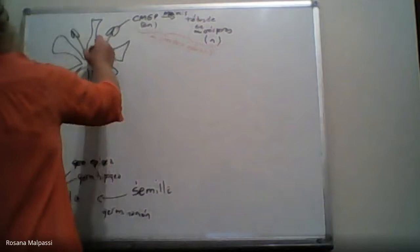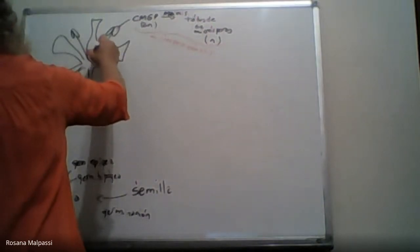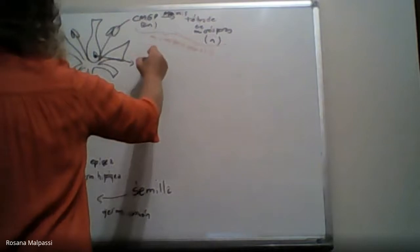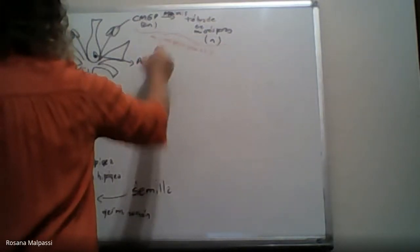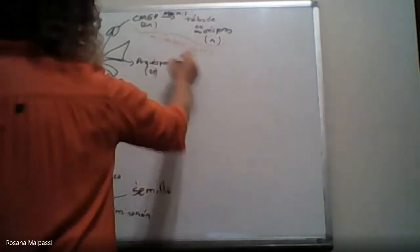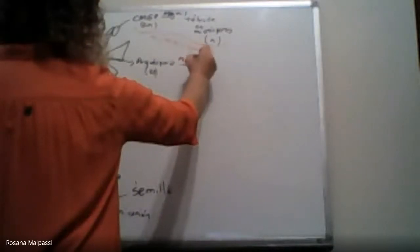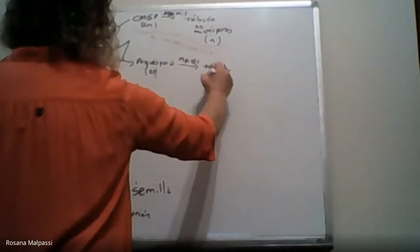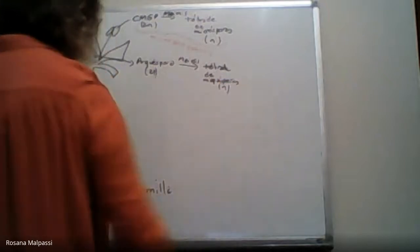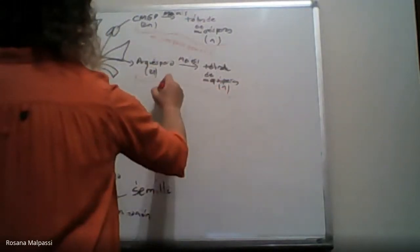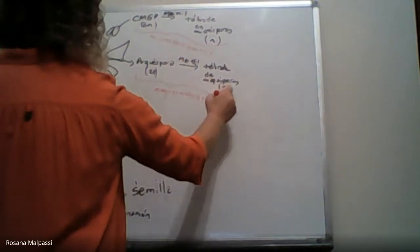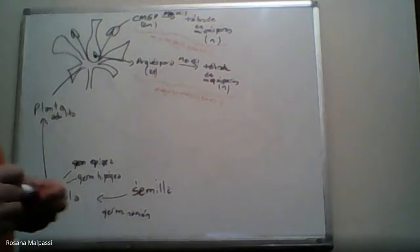Y por el otro lado, acá hay unas estructuras que son los óvulos, que en la nucela tienen una célula que se llama arquéspora. También es 2n. Va a sufrir meiosis y va a dar origen a la tétrade de megásporas.